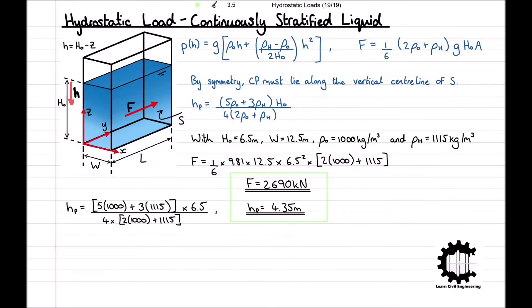This result is intuitive: since pressure does not vary horizontally across S, cp lies along the vertical centre line. Since pressure increases with depth, there is greater pressure at the bottom than the top, so cp is expected in the lower half of S — consistent with 4.35 m being below the midpoint of 3.25 m. That is how we calculate the hydrostatic load on a vertical end wall for a continuously stratified liquid. Please leave a like, subscribe, and post any questions in the comments below.